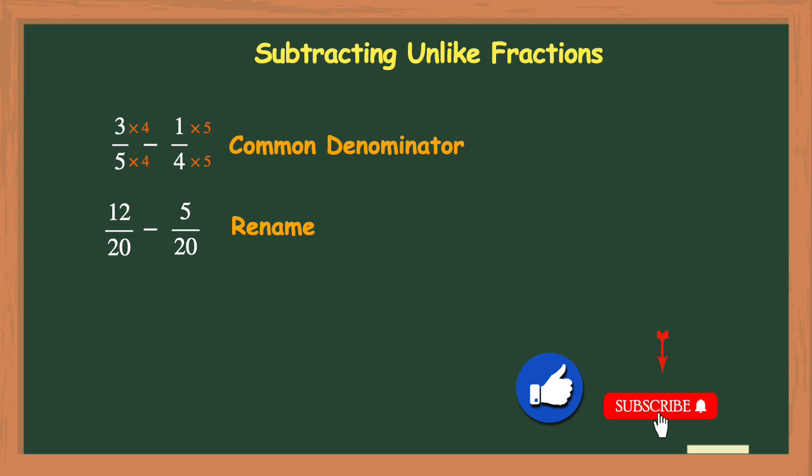Alright, now that our fractions have the same denominator of 20, we can subtract. To do this, we just subtract the numerators and keep the denominator of 20 the same. So 12 minus 5 is 7. And again, we'll keep the denominator of 20 so our answer or the difference is 7 20ths.